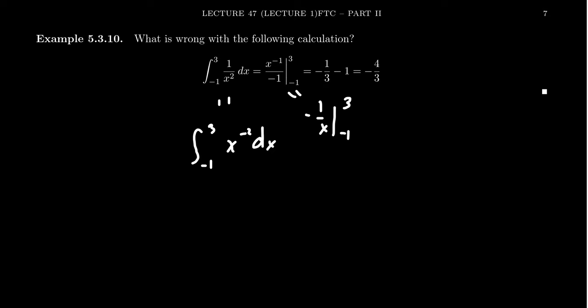So you get negative 1 third minus 1, which is equal to negative 4 thirds. Now, I want to mention to you that this is not the correct answer. This is total malarkey.